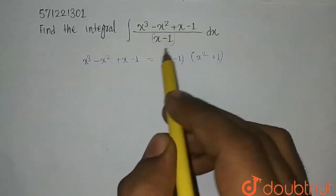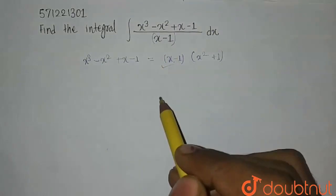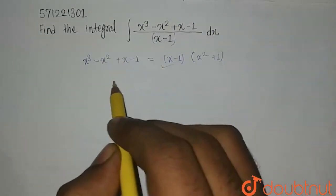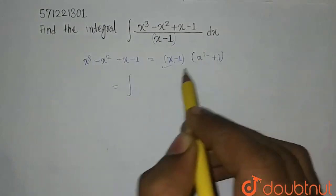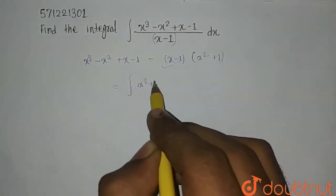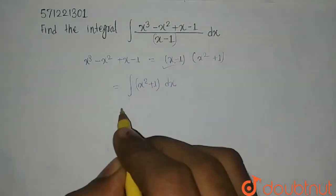So let's put it here. And by putting, we will get here, numerator and denominator will cut down. Therefore we will be left with only integration of this factor. So (x² + 1) is going to be integrated with respect to dx.